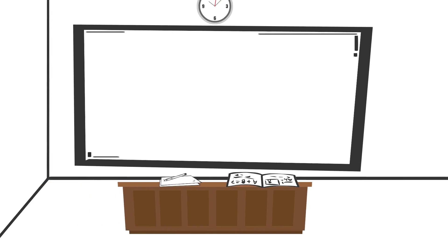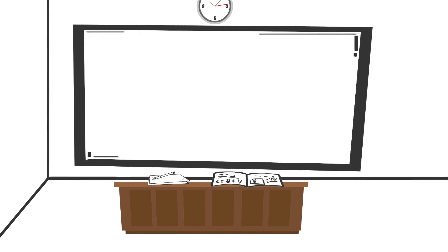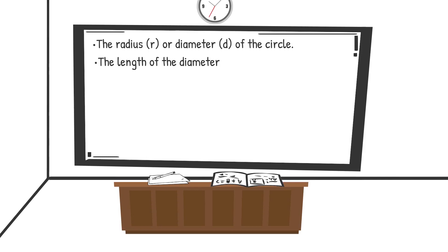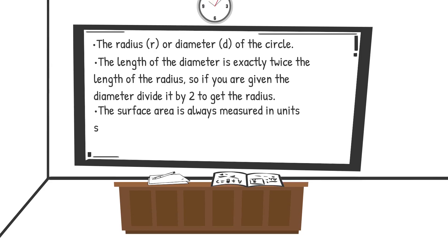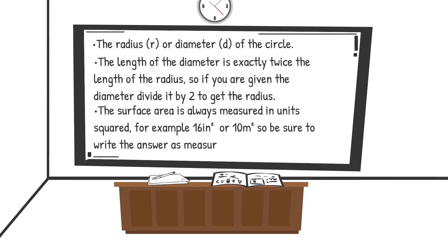Some things you need to know when finding the surface area of a sphere: you'll need to know either the radius, which is r, or the diameter, d, of the circle. The length of the diameter is exactly twice the length of the radius, so if you're given the diameter, divide it by two to get the radius. The surface area is always measured in units squared — for example, 16 inches squared or 10 meters squared — so be sure to write the answer as a measurement squared.